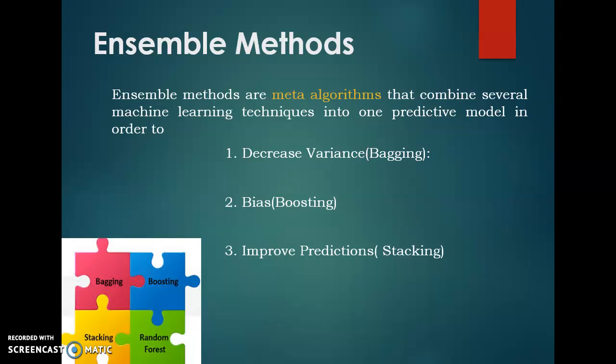Most ensemble methods generally use a single base learning algorithm to produce homogeneous base learners — learners of the same type — leading to homogeneous ensembles. There are also some methods that use heterogeneous learners, that is learners of different types, leading to heterogeneous ensembles.